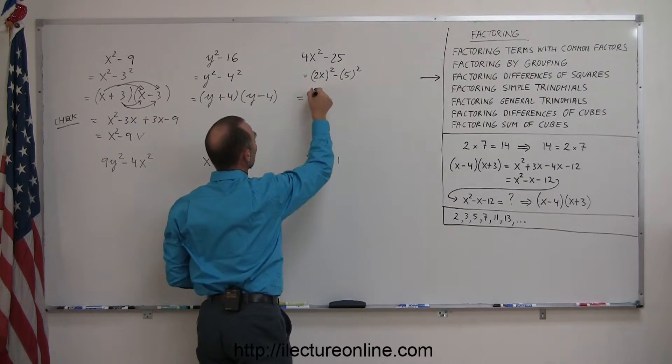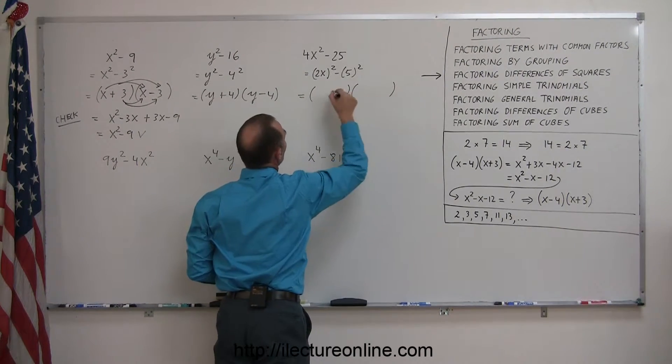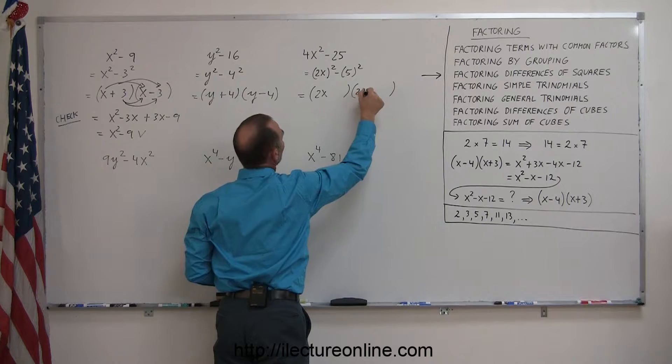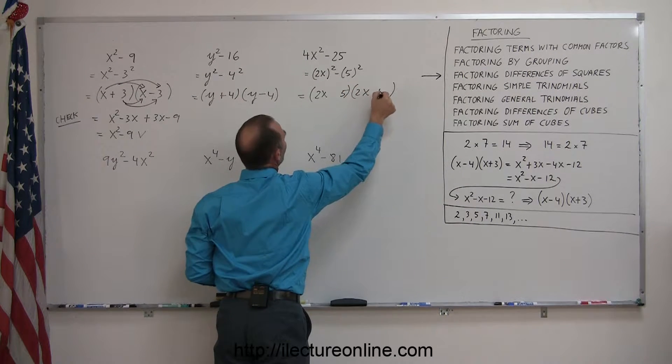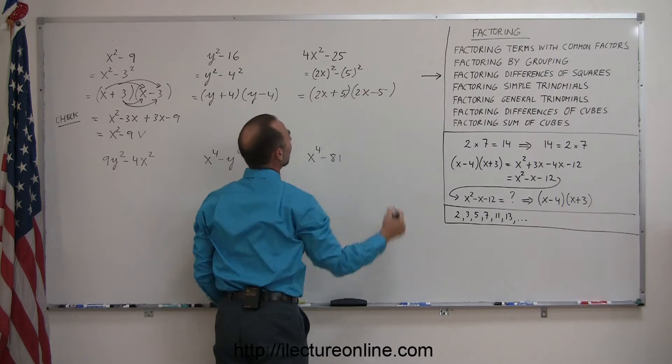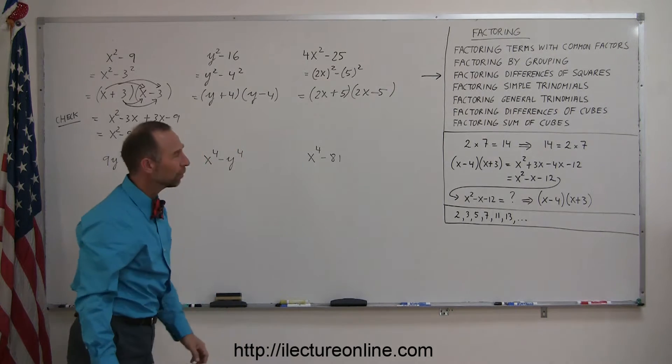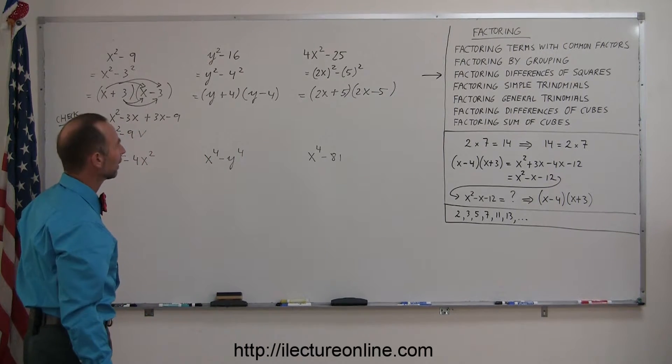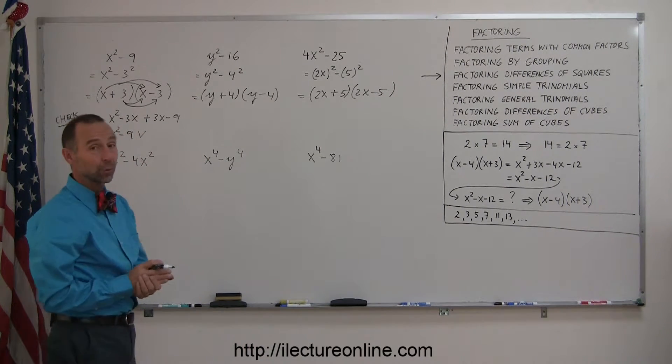And now when we factor it, we end up with a 2x, a 2x, a 5, and a 5, and a plus and a minus. So it really becomes an effort of finding what is being squared in each case.